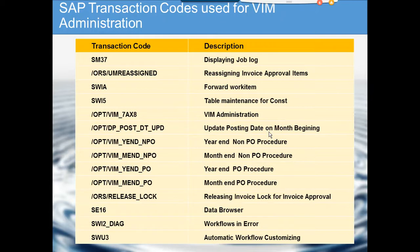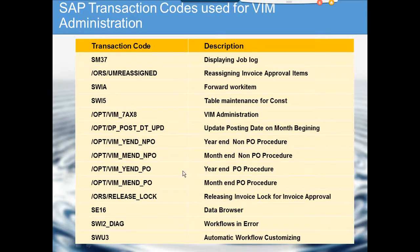There is also a year-end non-PO procedure. There are lots of things to do at year end for both VIM invoices and SAP invoices, because the document number changes when the fiscal year changes. You may have to update those numbers accordingly. The same applies to month end, and different countries have different rules — for example, Russia has specific rules. These transaction codes are very useful for managing those scenarios.